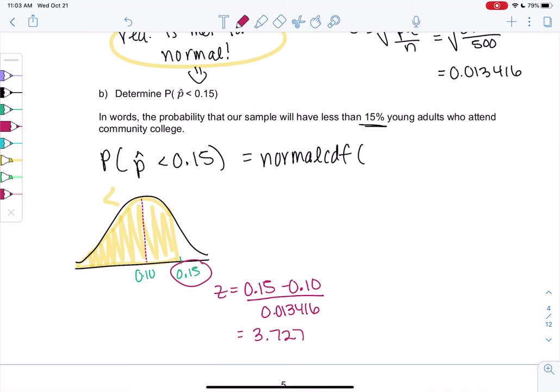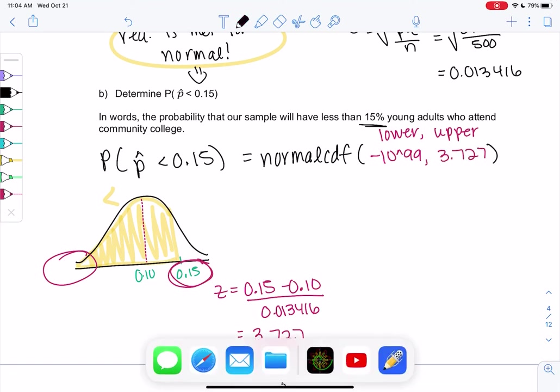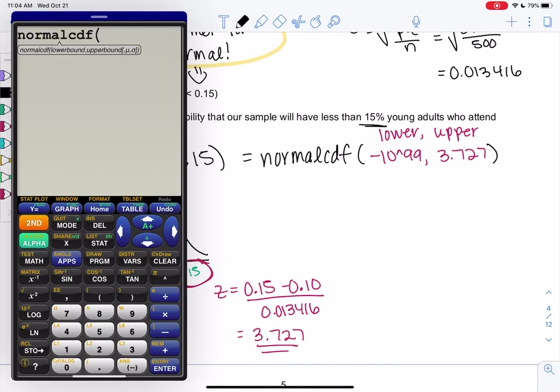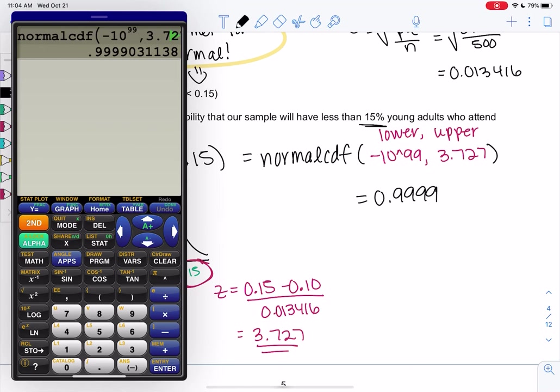So my z-score is 3.727, and we just do normal CDF, lower, upper. So my lower is going to be negative infinity, so negative 10 to the 99. And my upper is the z-score for 0.15, so 3.727. And we can use normal CDF. Negative 10 to the 99, 3.727. So normal CDF, lower, comma, upper in the calculator, enter, and we get almost 1, 0.9999. So it's a pretty big probability. And that's it.